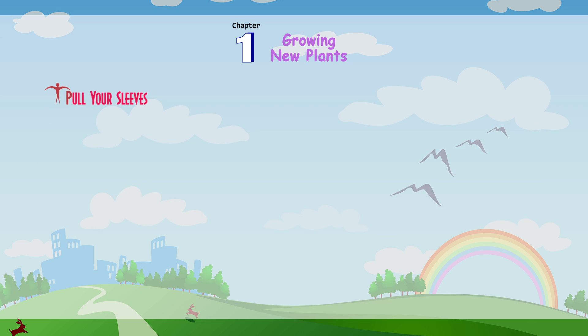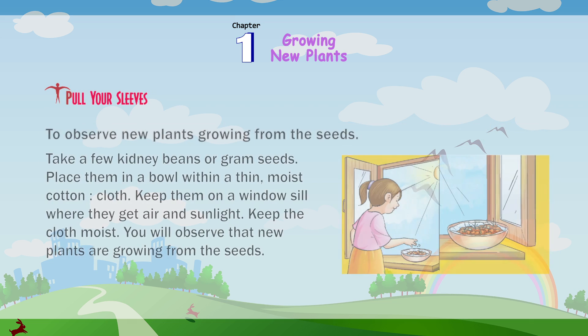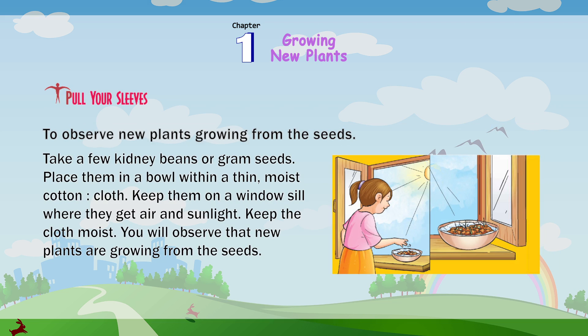Pull up your sleeves — to observe new plants growing from the seeds. Take a few kidney beans or gram seeds. Place them in a bowl within a thin, moist cotton cloth. Keep them on a windowsill where they get air and sunlight. Keep the cloth moist. You will observe that new plants are growing from the seeds.